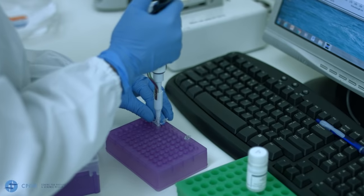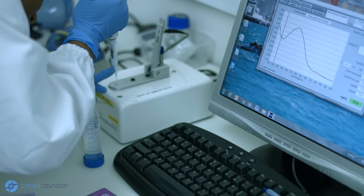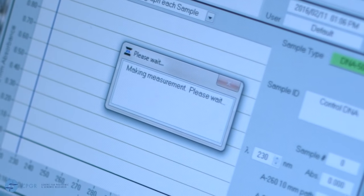Samples are always spun down to ensure that the DNA is at the bottom of the tube. A control DNA sample is always included of known concentration. This is used to check that the instrument is working optimally.